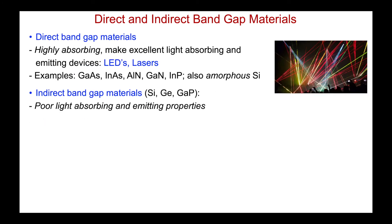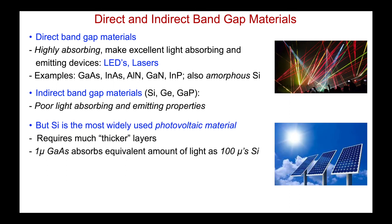Direct and indirect bandgap materials have quite different properties and very different applications. Direct bandgap materials, they're highly absorbing. They make excellent light absorbing and emitting devices. So they're used in LEDs and in lasers. Here's a classic Pink Floyd concept. Lasers all over the place. And examples are gallium arsenide, indium arsenide, others are listed. But also amorphous silicon, where I don't have a periodic lattice. That's actually a direct bandgap material. Indirect bandgap materials, crystalline silicon, crystalline germanium, they are poor light absorbing, poor emitting properties. They are really no good for light generating applications.